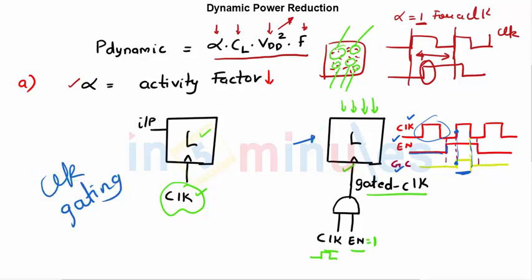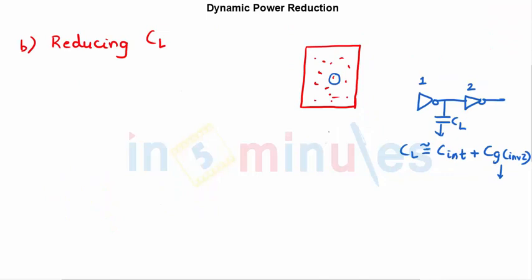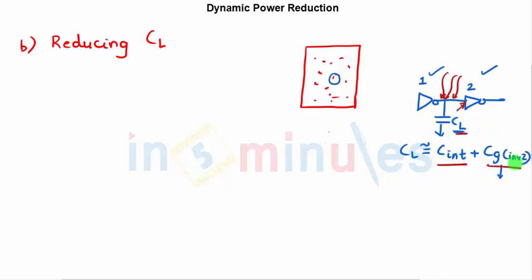Now let's understand reducing the load capacitance. Suppose an inverter is driving another inverter. The load capacitance is approximately equal to the interconnect capacitance plus the gate capacitance of the next stage. To reduce load capacitance we need to reduce interconnect capacitance, gate capacitance, or both. Interconnect capacitance is reduced by floor planning, which determines how interconnects are connected between different blocks on the IC.